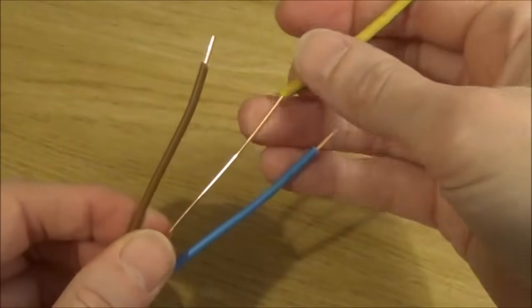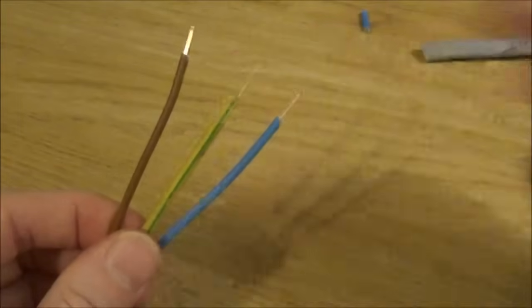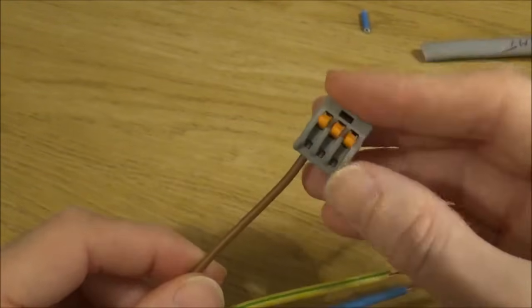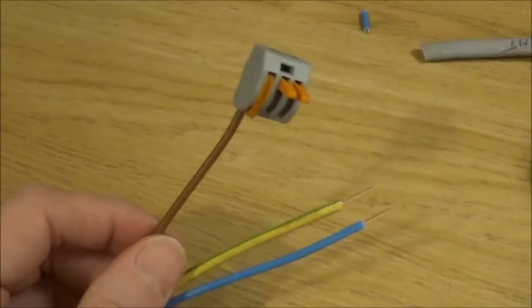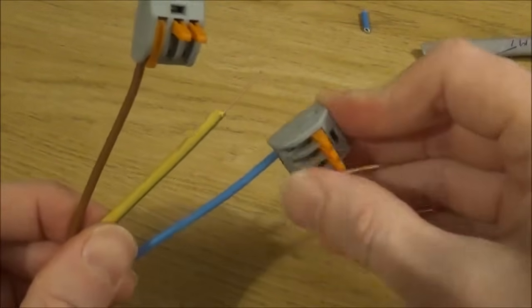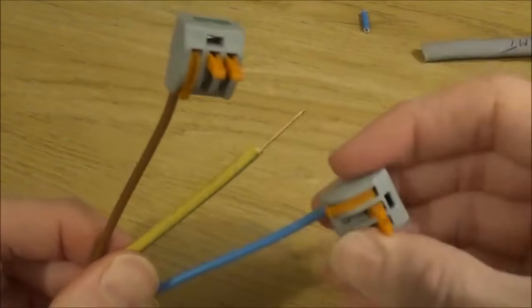So just cover your earth with some earth sheath, take your connector block, click that on there and then you can pop your other cables into the other connector blocks as required.